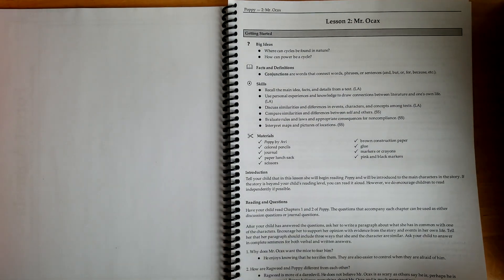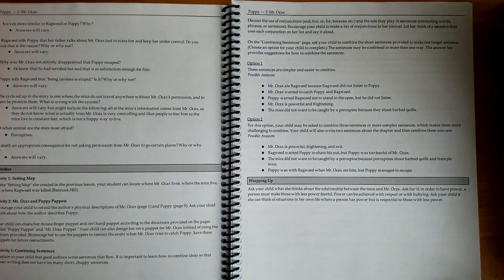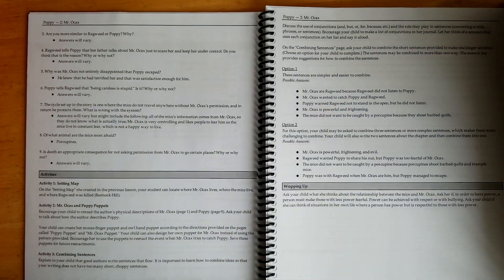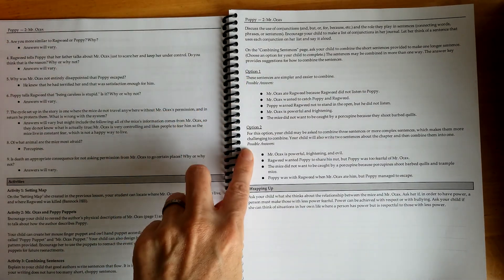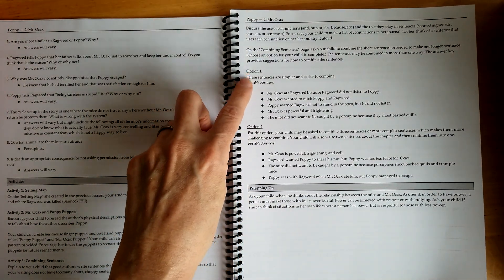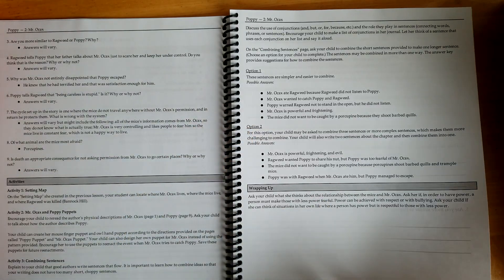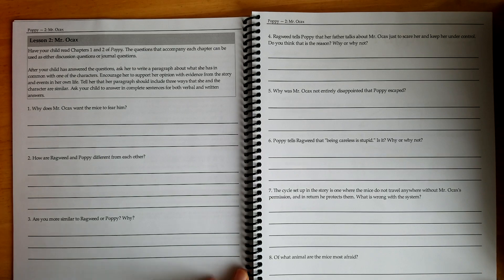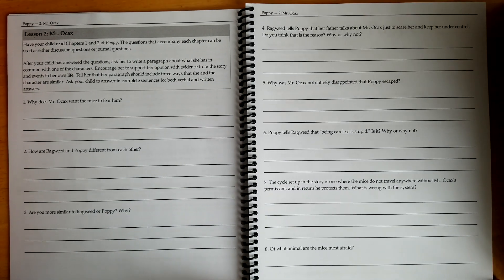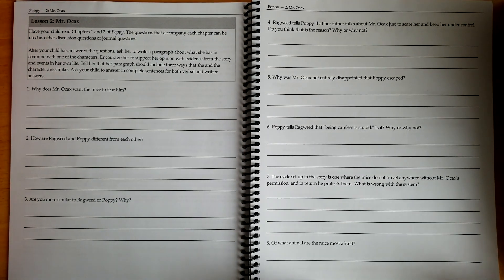This is lesson two. You can choose options. You don't have to do both options. There's option one that's a little bit easier and option two. A lot of times you're given two options. These are reading comprehension questions that go along with it.